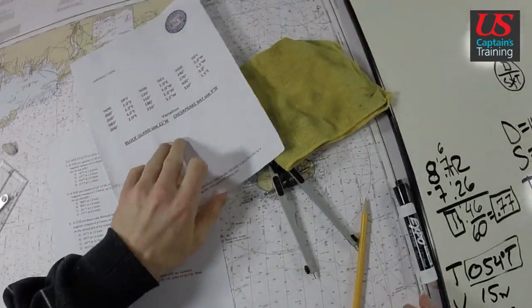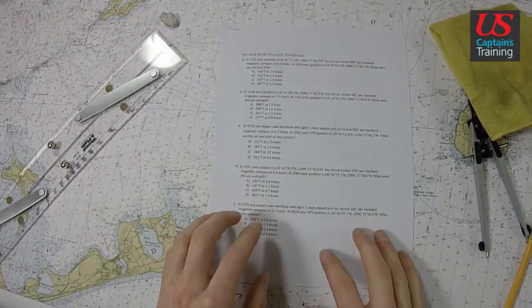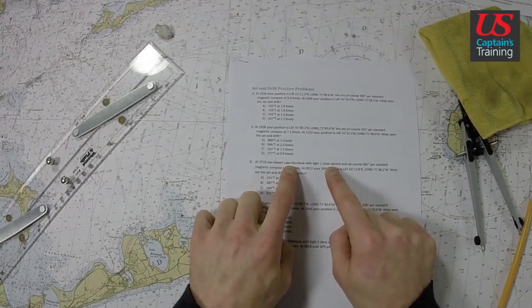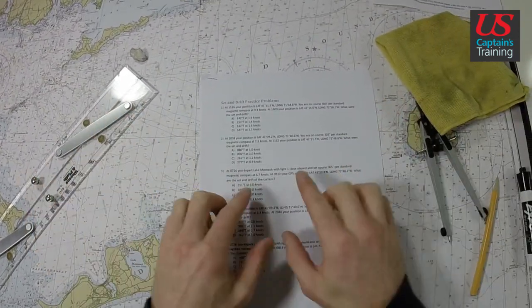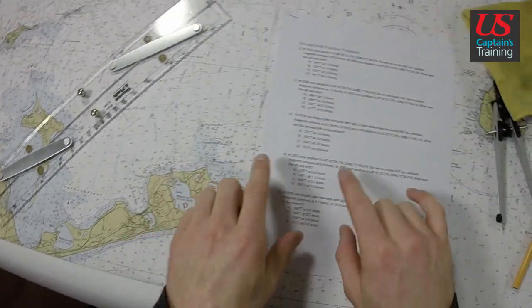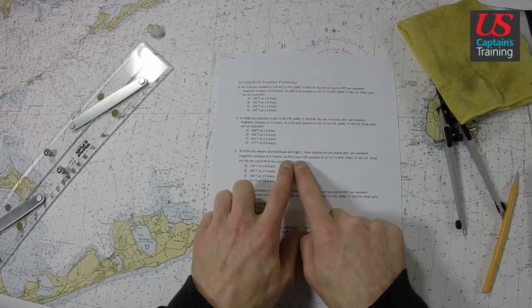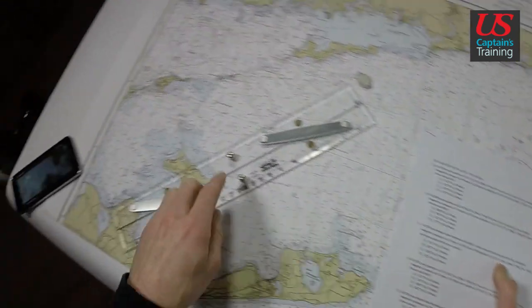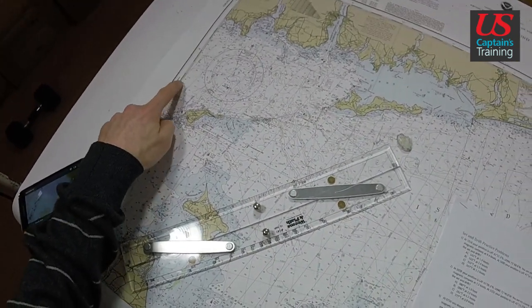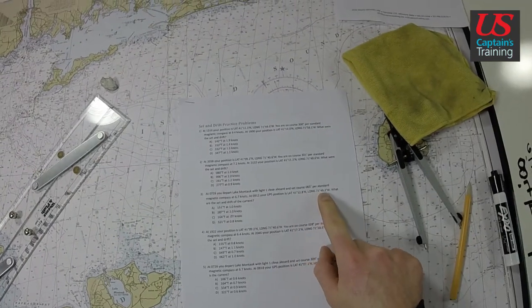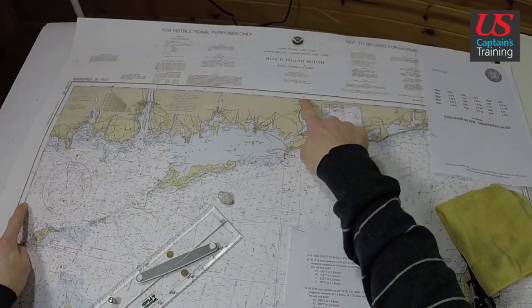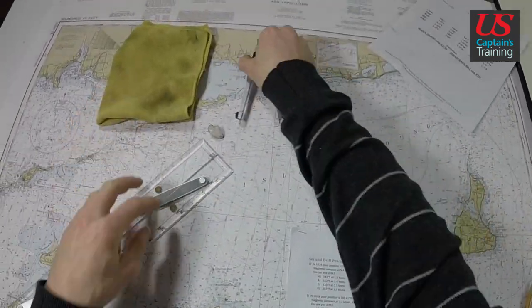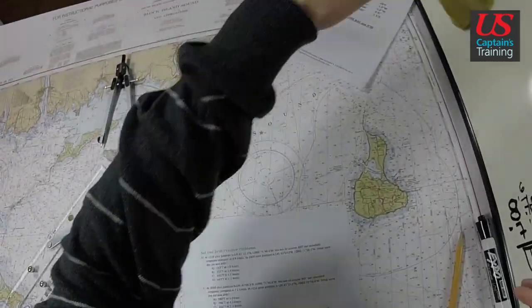Here we are. Let's find these latitudes and longitudes. So we start Lake Montauk light one close aboard. Perfect, it's right here. And at 0912, 41°12.8'. I'm going to stay on this side of the chart.